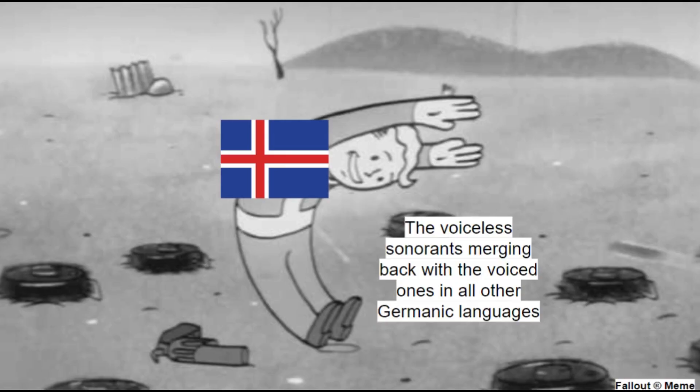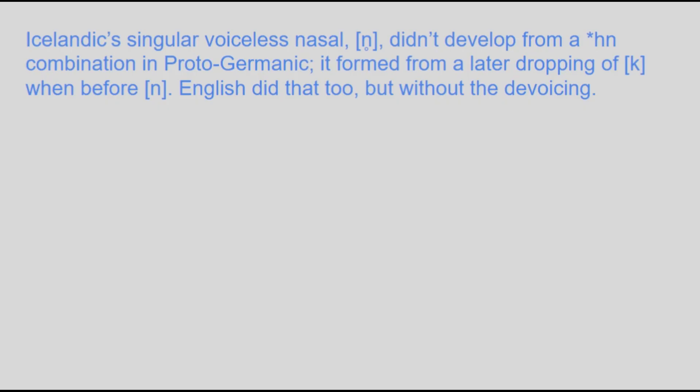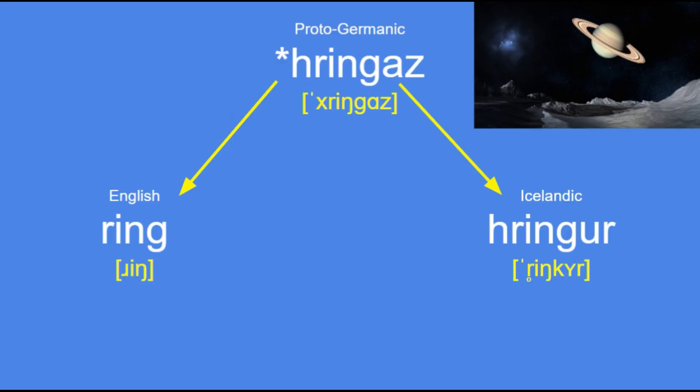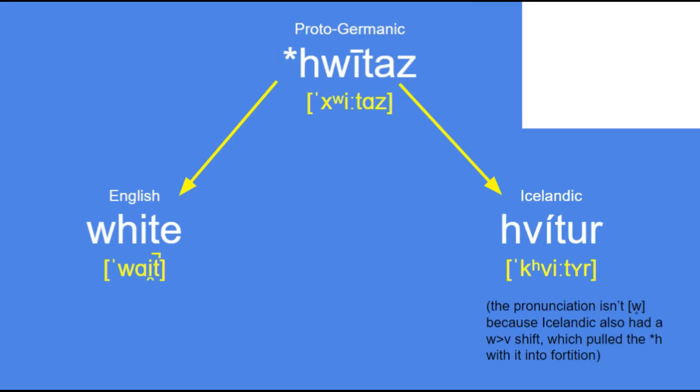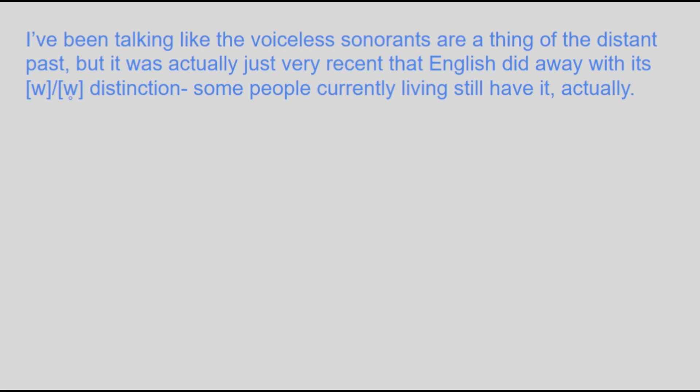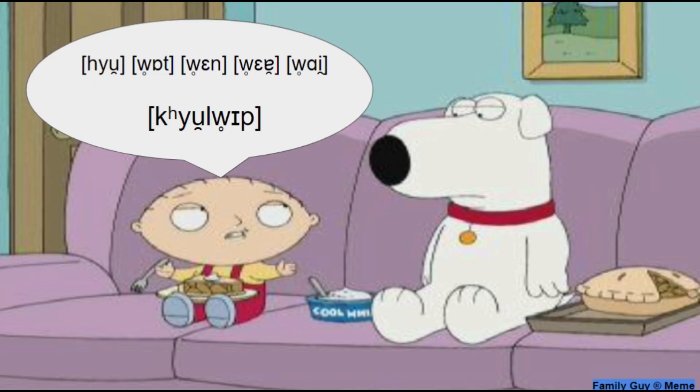The exception is Icelandic, where the voiceless/voiced distinction still exists. For example, Proto-Germanic *hringaz became Icelandic hringir and English ring; Proto-Germanic *hlūsēnan became Icelandic hlusta and English listen; and Proto-Germanic *hwītaz became Icelandic hvítur and English white. This distinction on hw is actually only just now on the way out of English — most people don't exhibit it, but us Americans have all heard someone who says 'who, what, when, where, why' with a breathy initial consonant. So this is the origin of that.